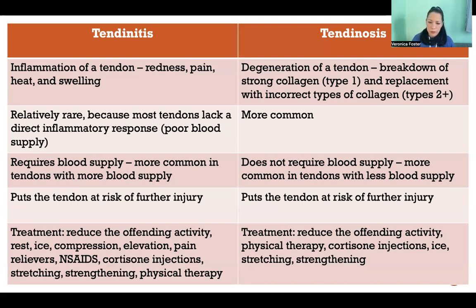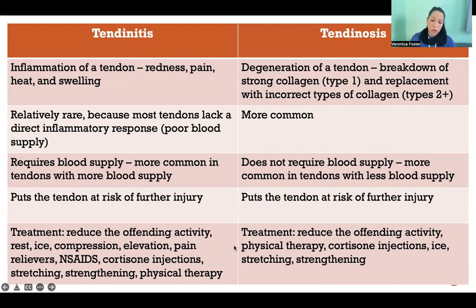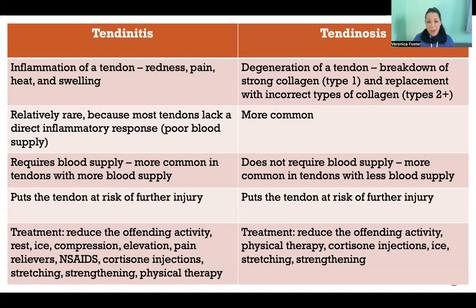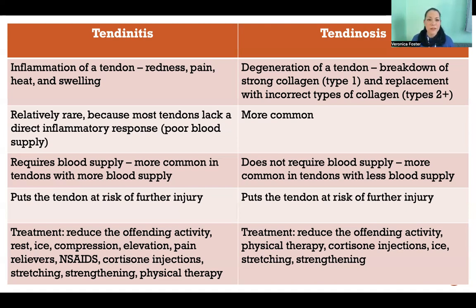In both cases, physical therapy is usually helpful and cortisone injections may also be offered. Stretching and strengthening are generally going to be helpful for both. For tendinitis, taking NSAIDs — non-steroidal anti-inflammatory drugs — could be helpful because the goal is to bring down the inflammation. But that's not going to be very effective for tendinosis, because the problem isn't inflammation — doing therapies to address inflammation won't be as effective if inflammation isn't the issue.